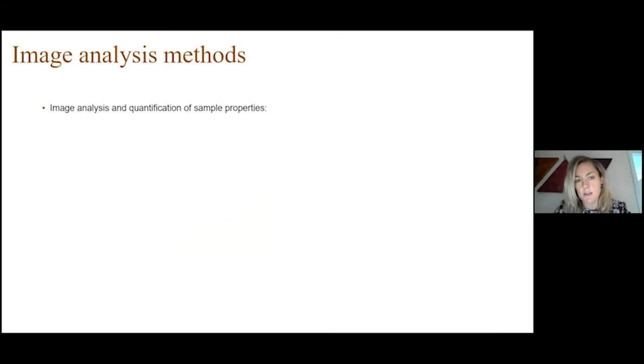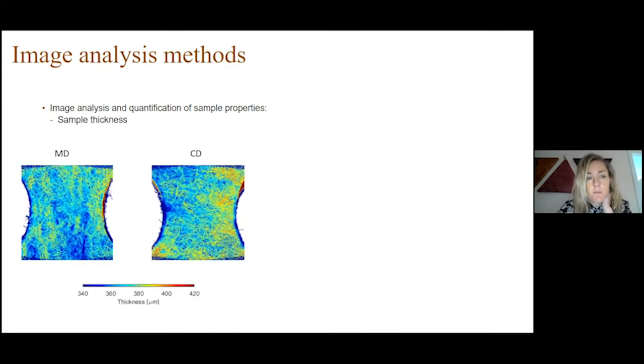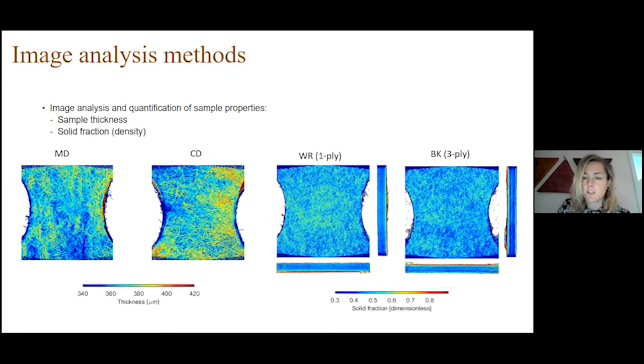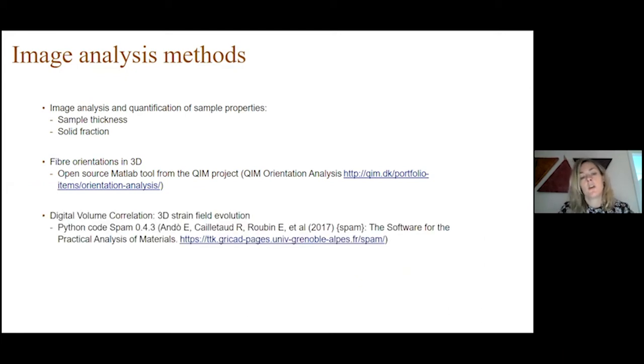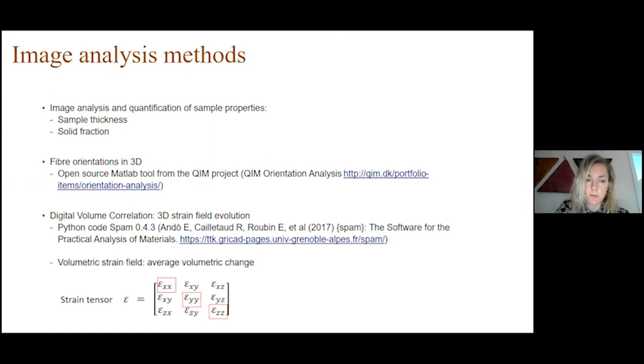The 3D image stacks we obtain from the tomography can be used to quantify sample properties. For example, we can quantify how the sample thickness varies spatially in the samples or the solid fraction or fiber density. We also use an open source tool to evaluate the orientation of fibers in 3D. But here I will focus on results from digital volume correlation, for which we use a Python code called SPAM. I will show results in terms of a volumetric strain field, which represent an average volumetric change in the material.